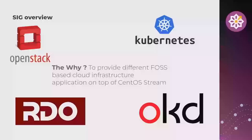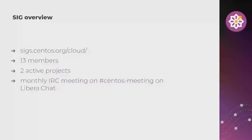We are pleased to welcome new members this year. Currently we have two projects: RDO and OKD, which are both distributions. RDO is for OpenStack and OKD for Kubernetes. Our documentation lives at SIGs.centos.org in the cloud namespace — we did that migration last year. We have 13 members, but only about half are really active. We hold a meeting every month on the CentOS meeting room and Libera Chat.